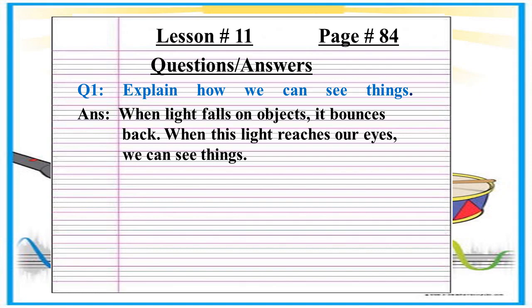Okay, question number 1 is: Explain how we can see things. Answer is: When light falls on objects, it bounces back. When this light reaches our eyes, we can see things.